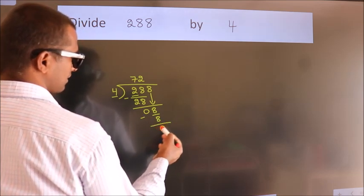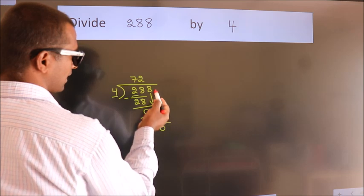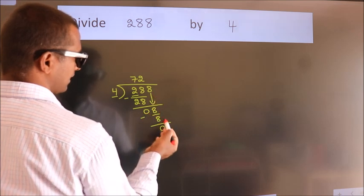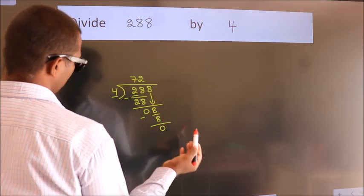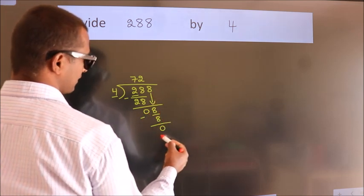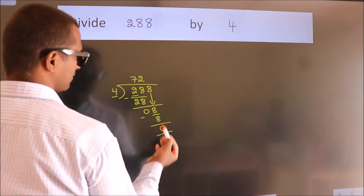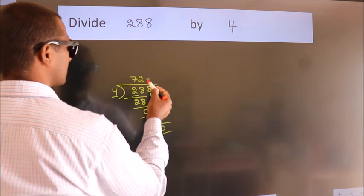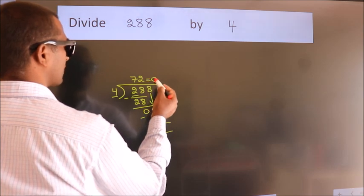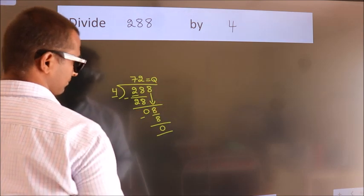After this, there are no more numbers to bring down, and we got remainder 0. So this is our quotient: 72.